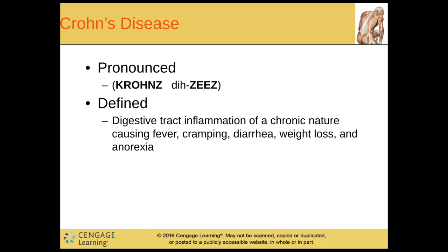We have Crohn's disease. This is a digestive tract inflammation of a chronic nature. It can cause fever, cramping, diarrhea, weight loss, and anorexia — again, not the eating disorder, just a lack of wanting to eat, or the ability to eat.